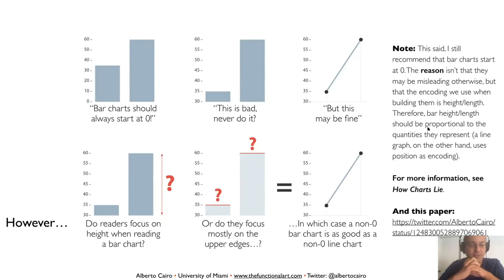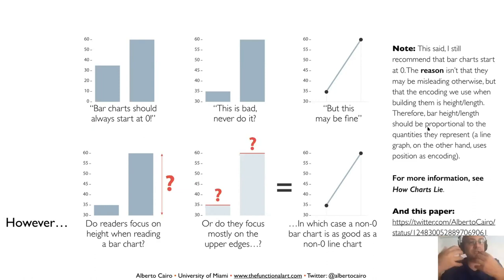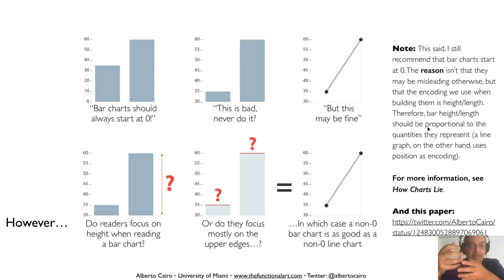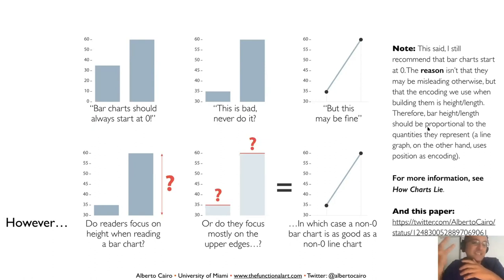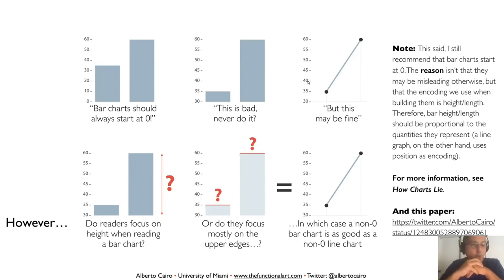I still recommend not truncating the axis of a bar chart, but this has nothing to do with distortion or lying to people. It has to do with the inner logic of encoding. Visualization is based on encodings — we encode numbers using properties of objects such as height, length, position, area, angle, slope, or color. The method of encoding in a bar chart is length measured from a common zero scale. Therefore, out of logic, if you truncate the axis of a bar chart, that goes against the logic of how the bar chart is created. So I still have a reason to recommend it, but it's not that the bar chart is distorted per se, because if the bar chart has a scale, you can still read it.